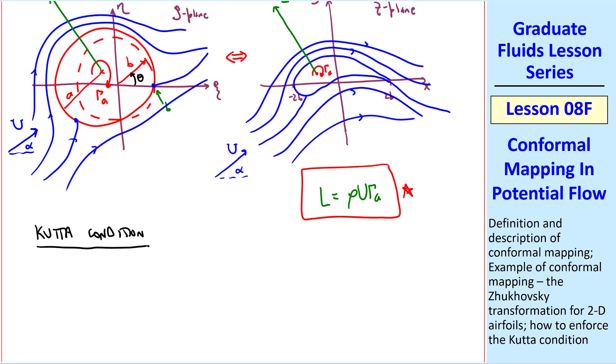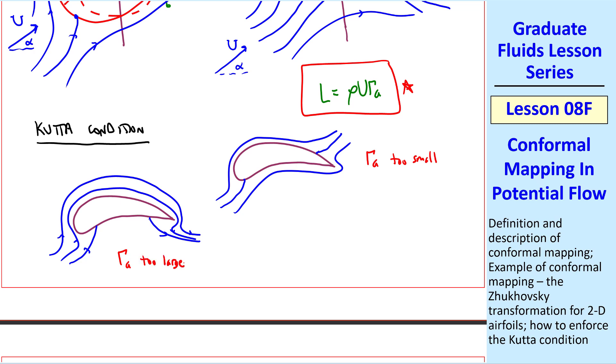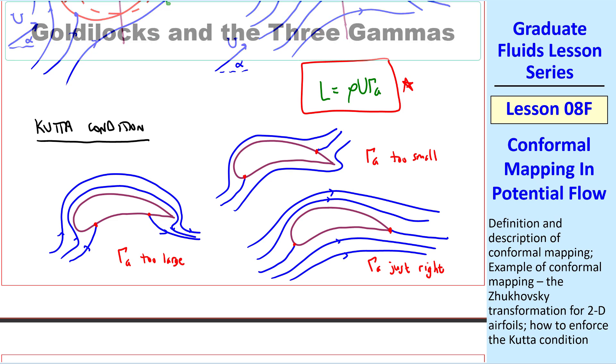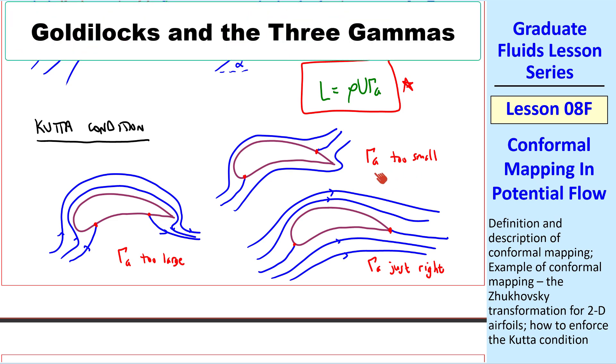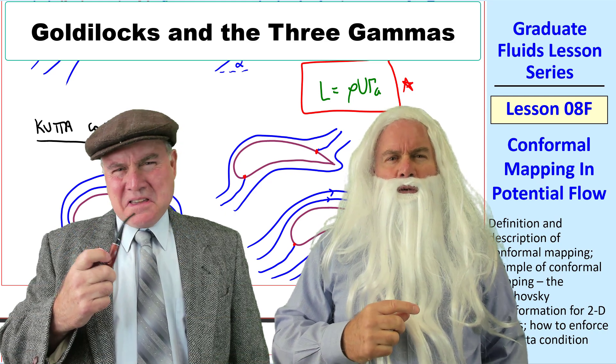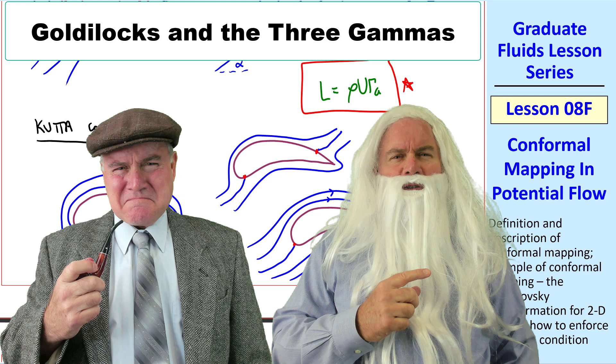Finally, I want to mention the Kutta condition. If gamma A is too small, the rear stagnation point will be on the upper surface of the airfoil. If gamma A is too large, the rear stagnation point will occur on the bottom side of the airfoil. If we adjust gamma A properly, the rear stagnation point occurs at the trailing edge. This is when gamma A is just right. I call this Goldilocks and the three gammas. Gamma too small, gamma too large, and gamma is just right. Yeah, that's a pretty poor attempt at humor. Oh, that's what they call a dad joke, sonny.